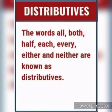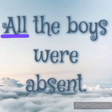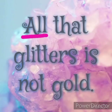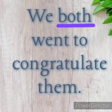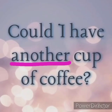The next category of determiners is distributives, sometimes considered as quantifiers. Distributives refer to a group or an individual within a group, besides indicating amount or number. Words like 'all', 'both', 'each', 'every', 'several', 'most', 'enough', 'other', and 'another' are distributives. For example: 'All the boys were absent.' 'All that glitters is not gold.' 'We both went to congratulate them.' 'Could I have another cup of coffee?'